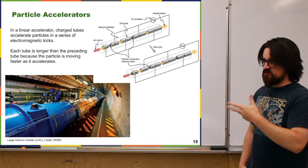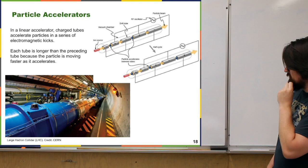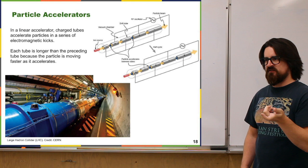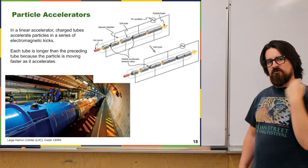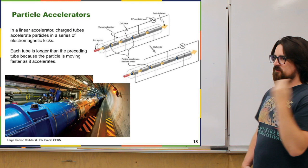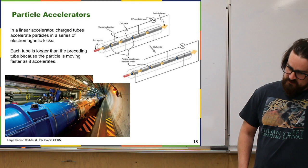Earlier I showed you pictures of those cloud chambers, mobile chambers where you can see the paths of subatomic particles. But if we wanted to start really probing how these particles acted and try to study them better, we sort of went the route of taking things we already had and accelerating them — basically throwing them really, really fast at other things and seeing what happened. So in order to do that, you need to be able to accelerate particles, and we end up building things called particle accelerators. There are a number of different kinds.